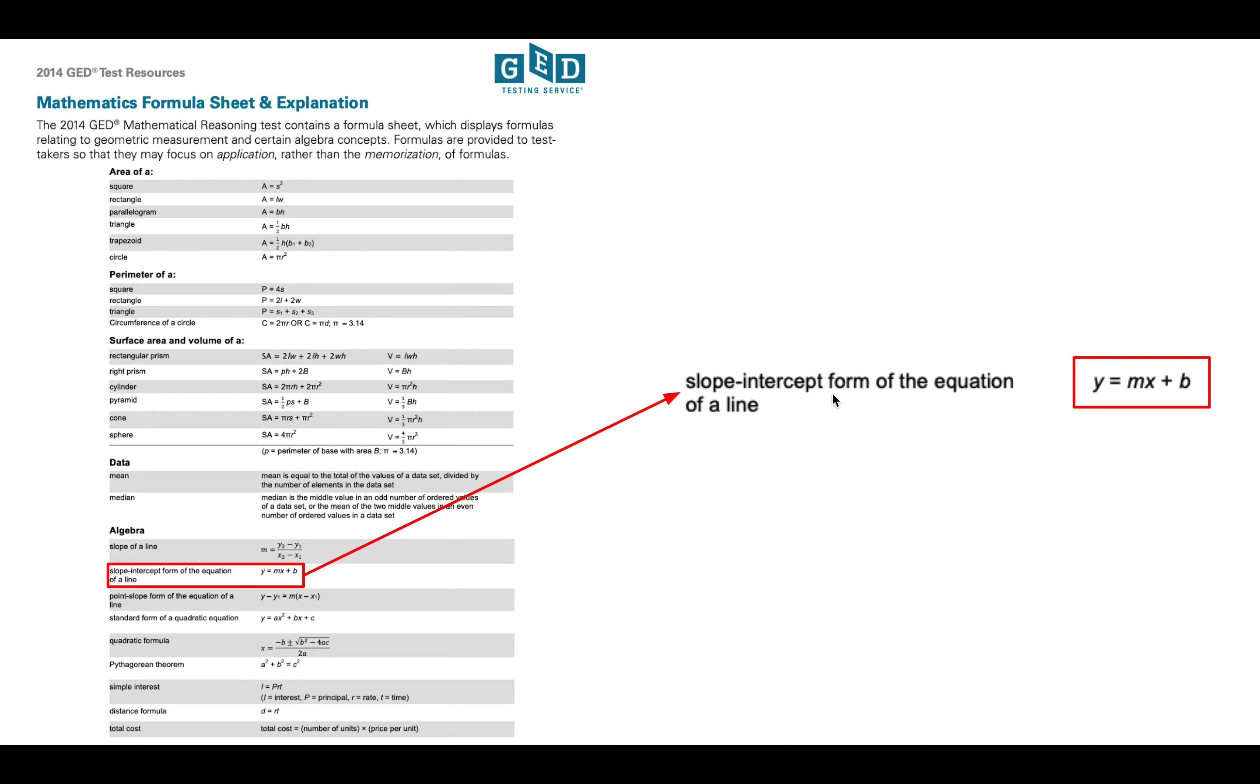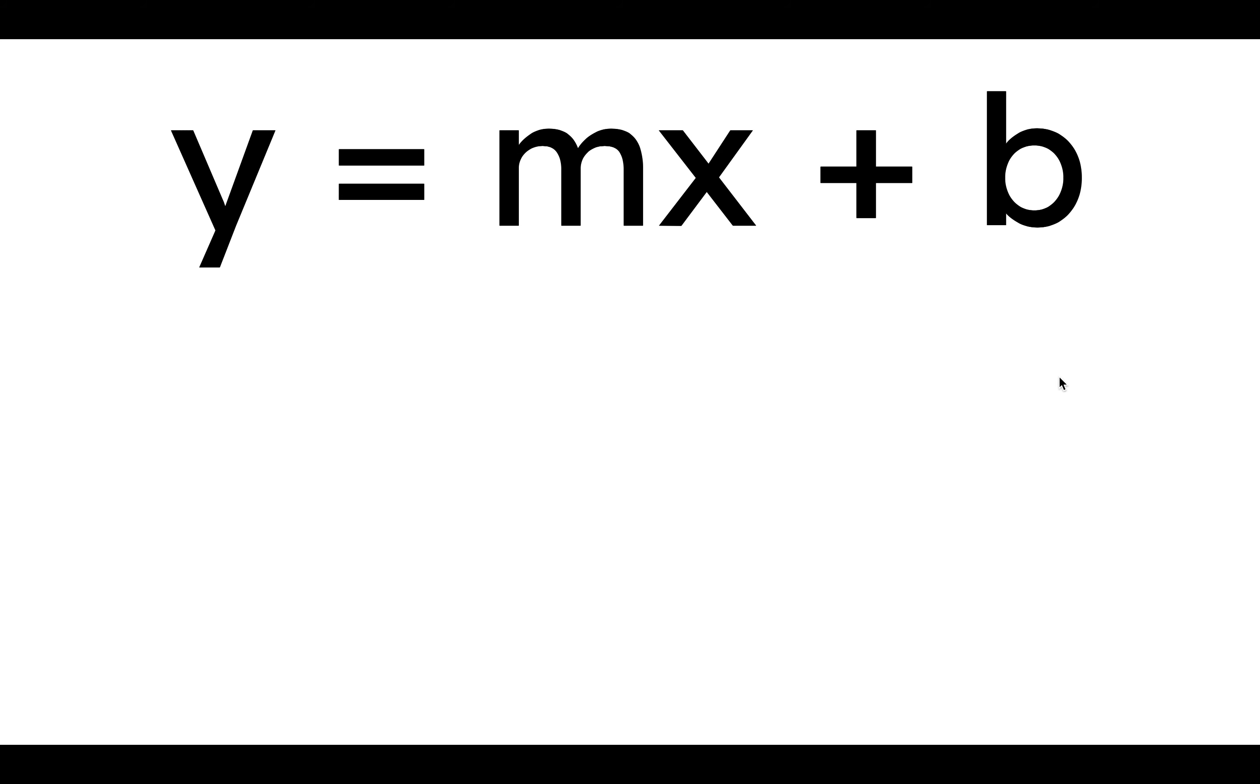It's called the slope-intercept form of the equation. If you made it through, let's say, ninth grade geometry, you probably encountered this. This is one of the famous equations. And if you didn't, that's okay. It's pretty simple. So let's take a look at it. We have four letters, y, m, x, and b.